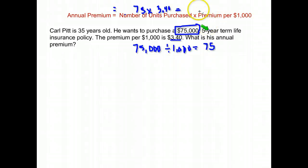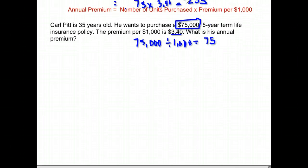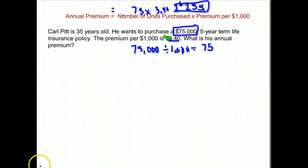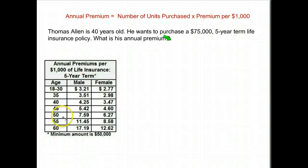Notice we didn't do anything with the five-year — that doesn't have anything to do with our calculations at this point. Where you use that is if they give you a chart showing different rates; that's when it would come into play. But here we don't worry about it at all. We just get our answer of two hundred and fifty-five dollars.